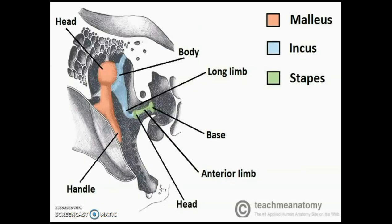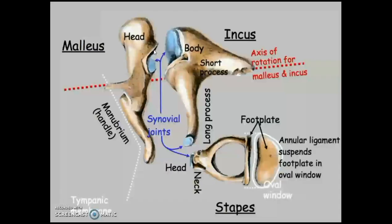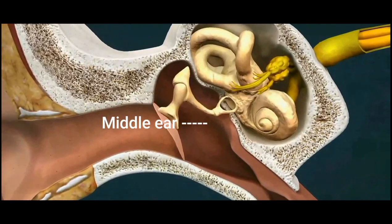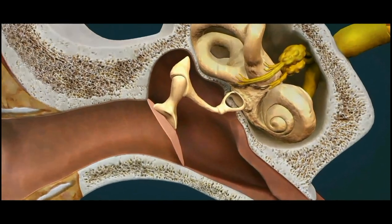When you see the right middle ear here, you can see the 3 ossicles — malleus, incus, and stapes — forming a semi-rigid bony chain. Between these ossicles there are 2 articulations: between incus and malleus there is the incudomalleal joint, and between incus and stapes there is the incudostapedial joint. You can see how the footplate is attached to the internal ear here.